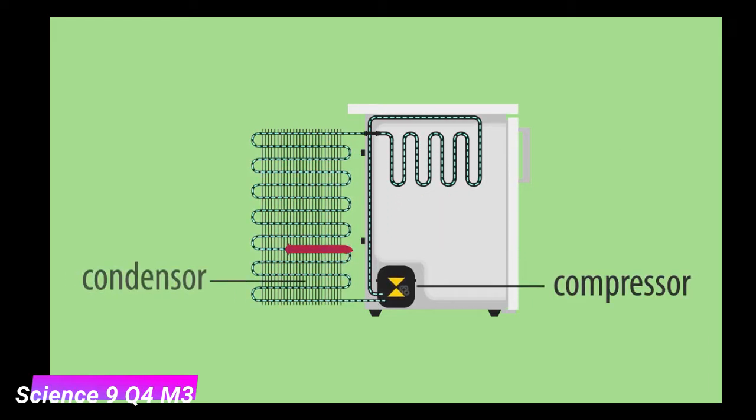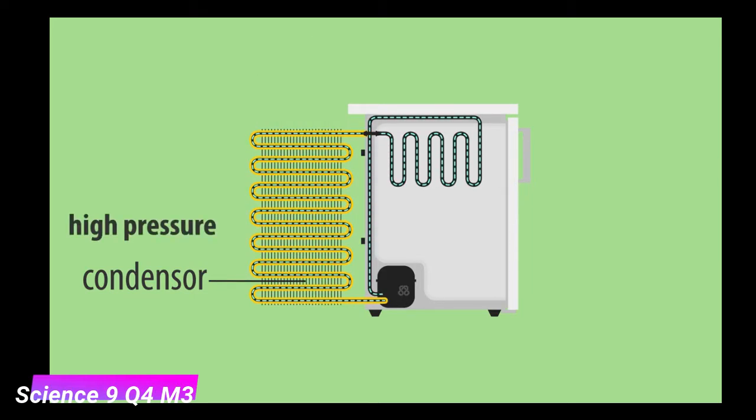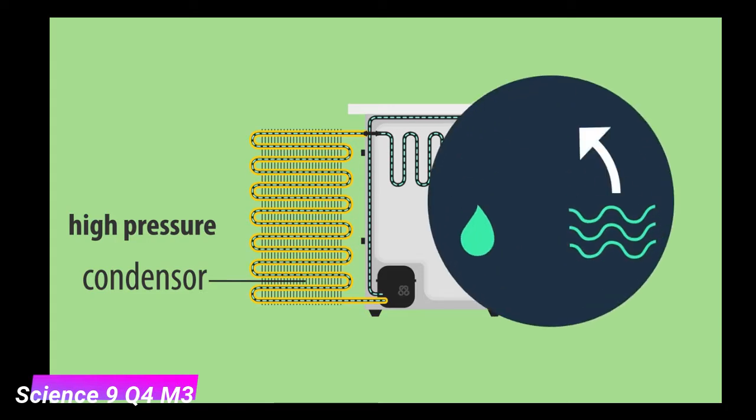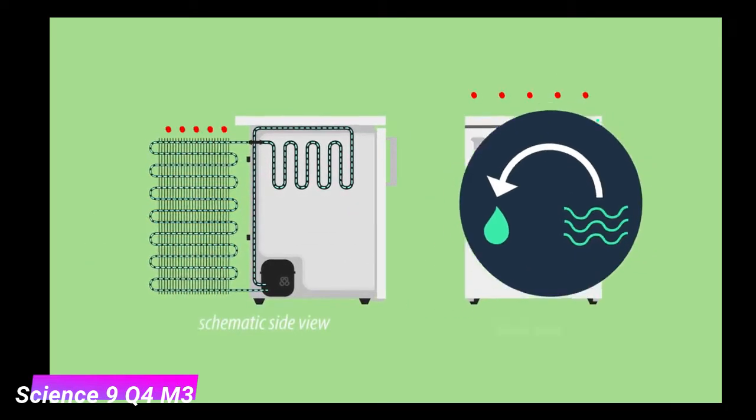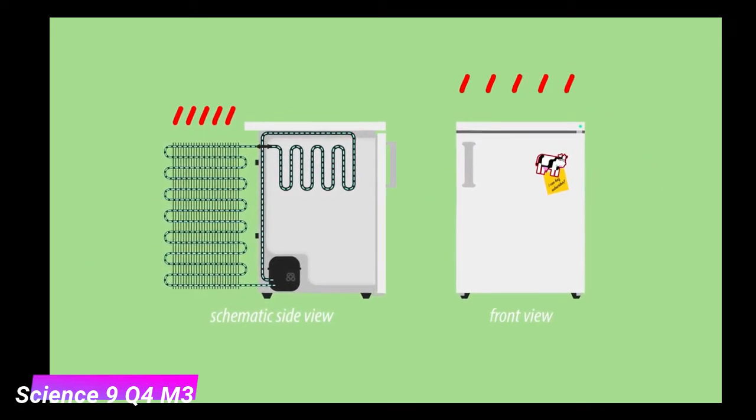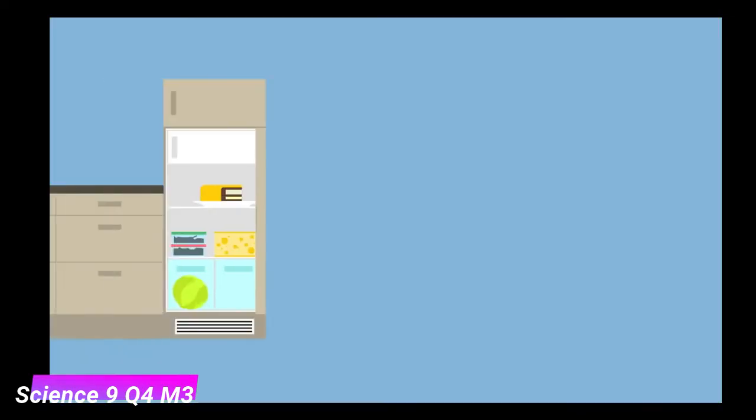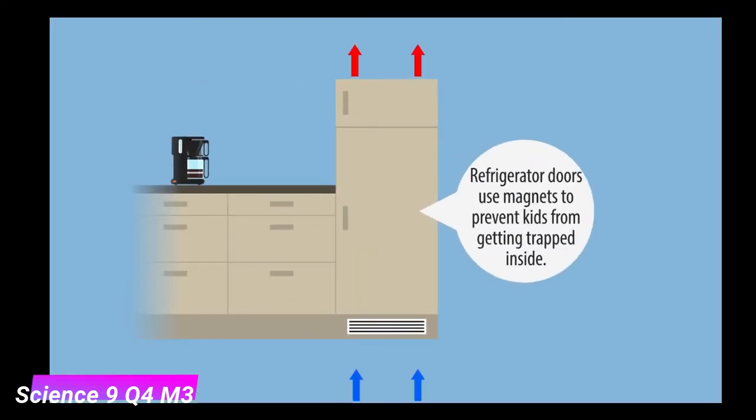As it flows through the condenser at the back of your fridge, the coolant now radiates its heat away to the ambient air. Here it condenses under pressure, turning most of the coolant into a liquid. This is also why warm air rises from the back of your fridge, and why built-in fridges need air vents top and bottom.